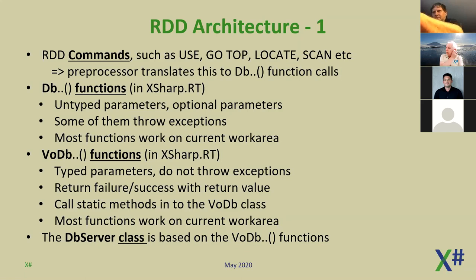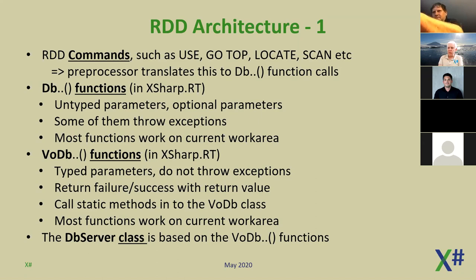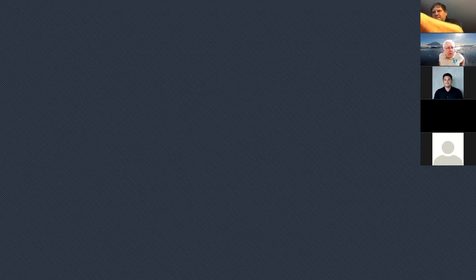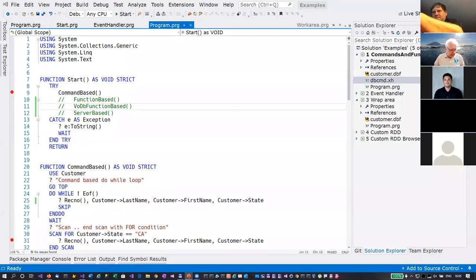Internally in X-Sharp, the VODB functions call methods in a class where the actual work is done. The fourth layer is what people from Visual Objects know as the DB Server class — an object-oriented layer on top of the VODB functions. That's enough PowerPoint; let's look at some code.